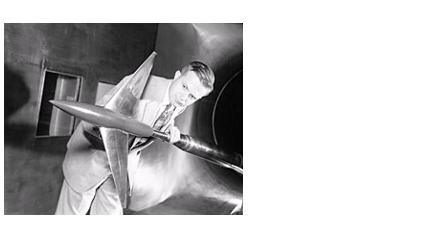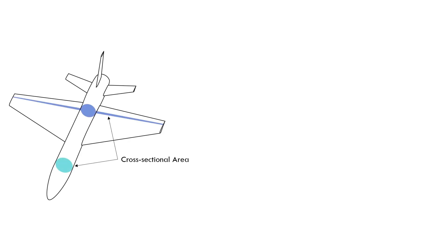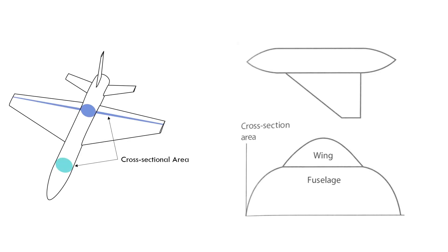Dr. Whitcomb experimented with several different axisymmetric bodies and wing-body combinations in a transonic wind tunnel. What he found was that the key factor influencing drag was not just the aircraft's shape, but how its cross-sectional area changed from nose to tail. Rapid or uneven changes in that area caused large increases in drag. In other words, the drag created was directly related to the change in cross-sectional area of the vehicle from nose to tail.